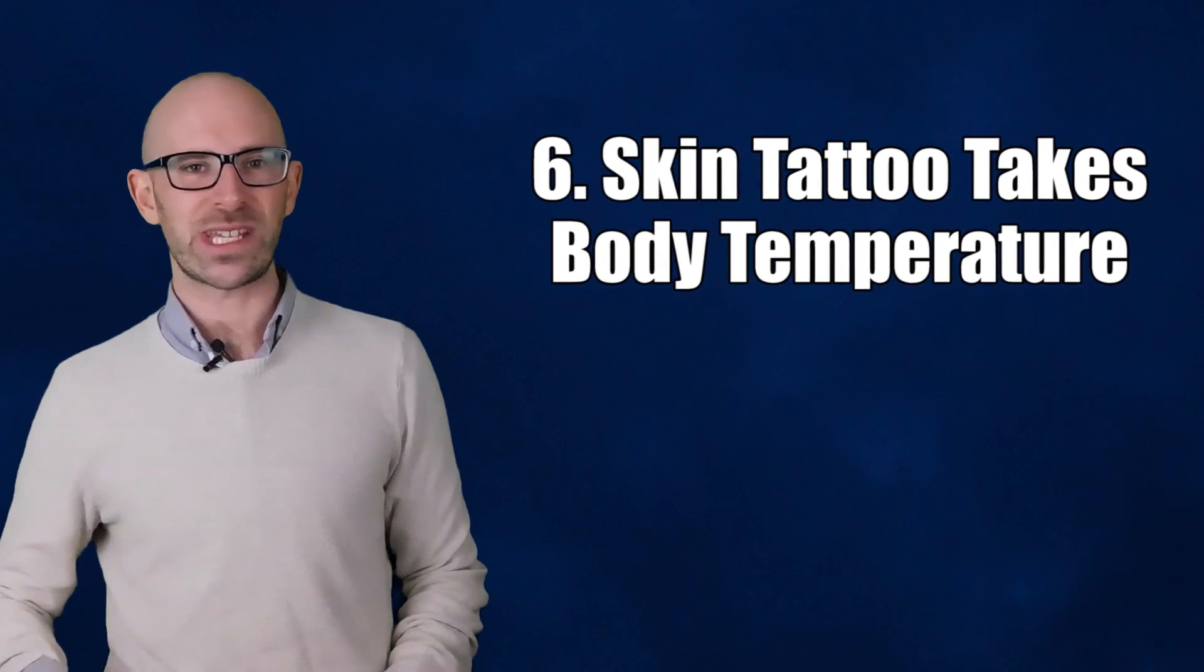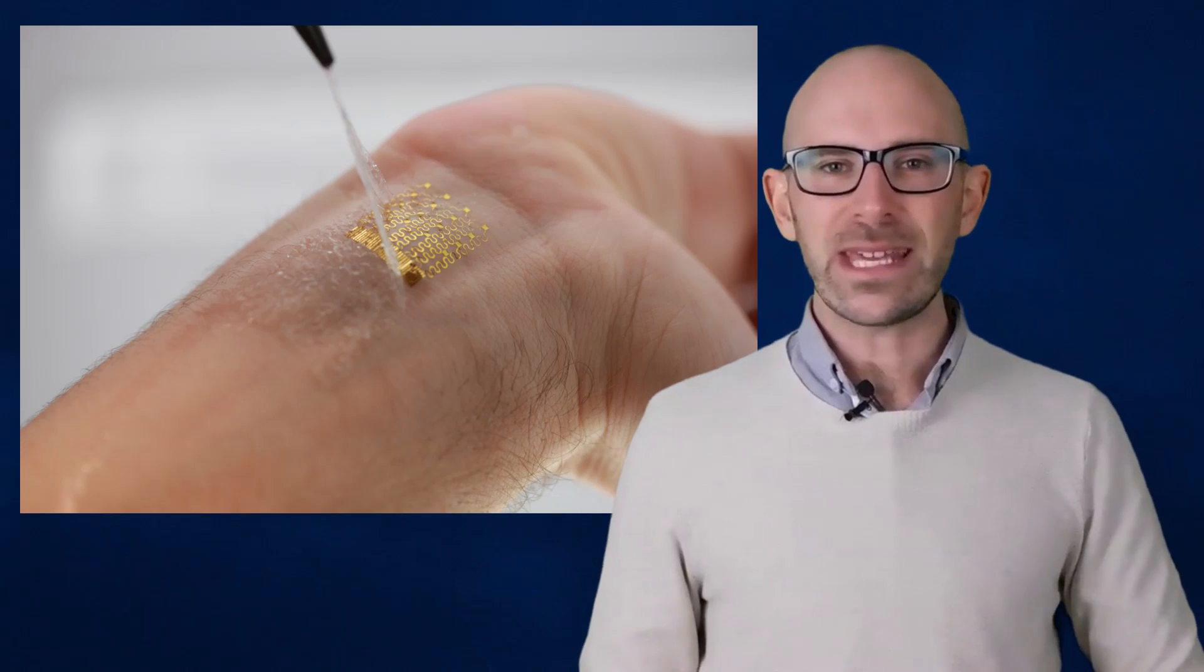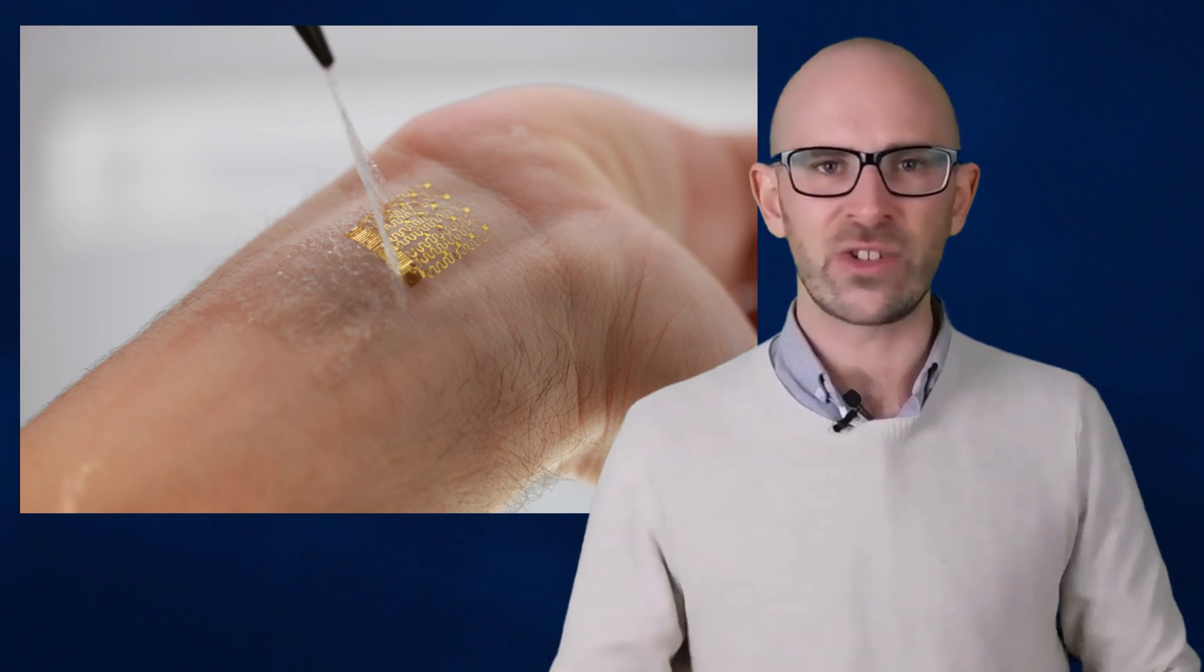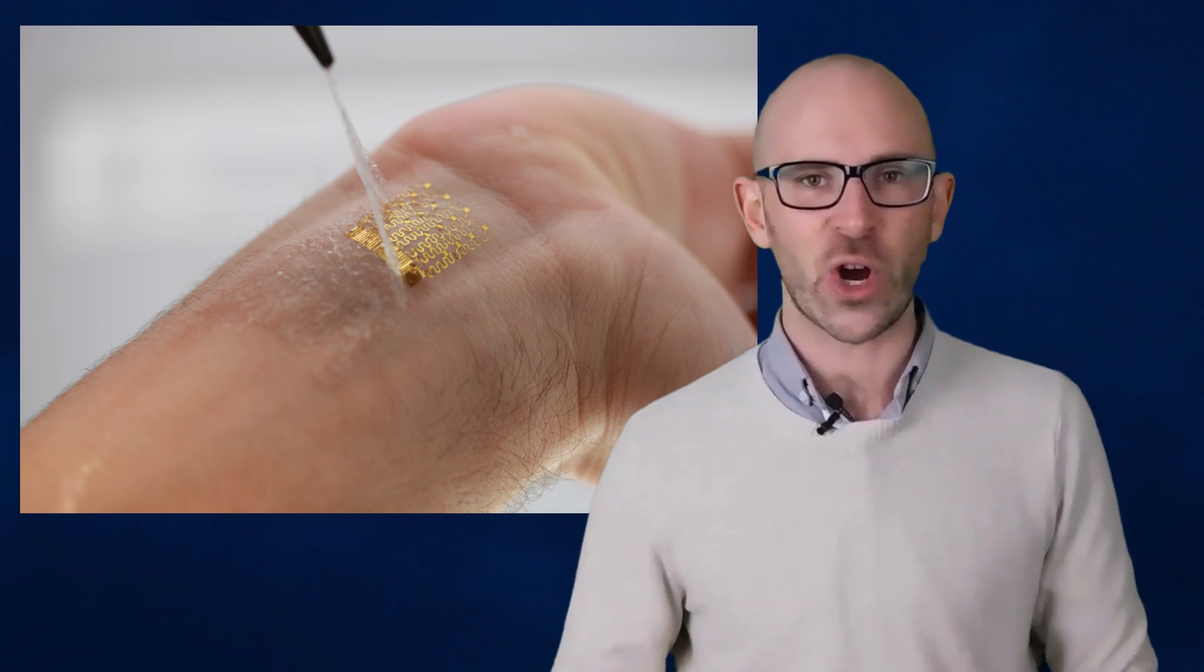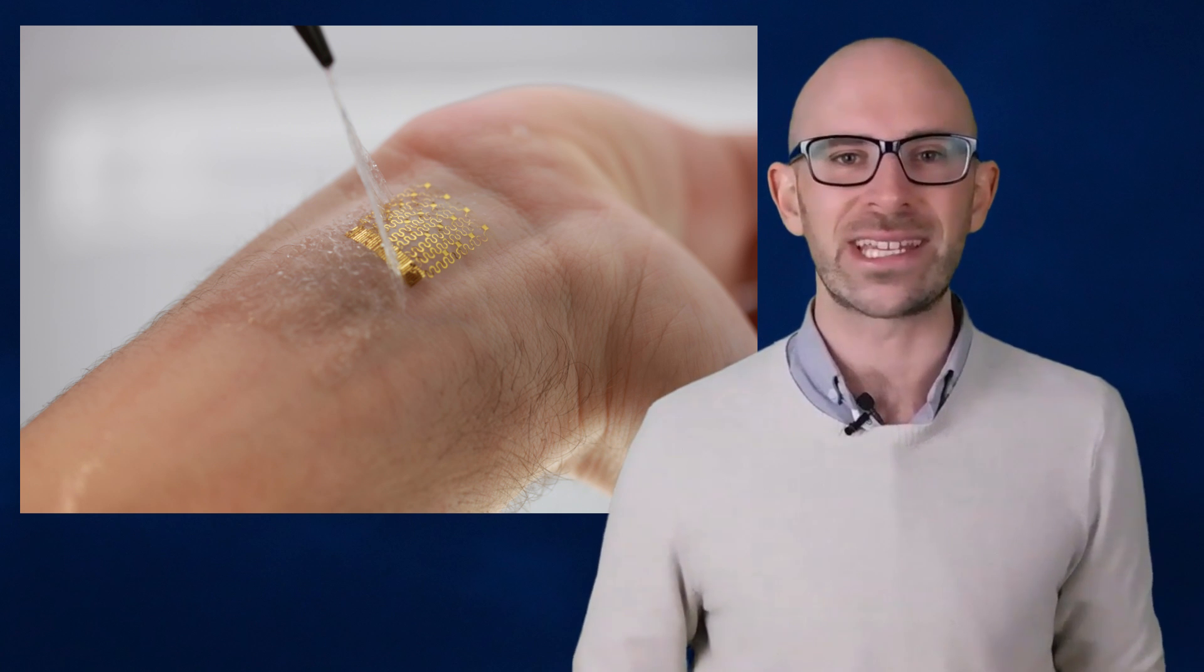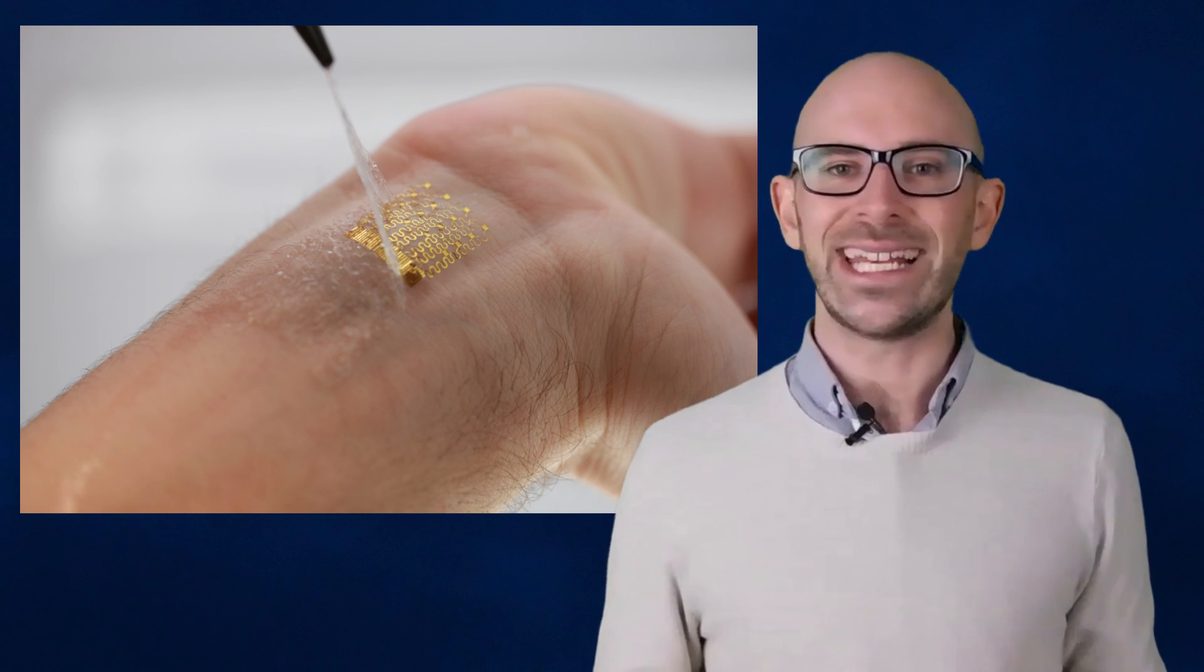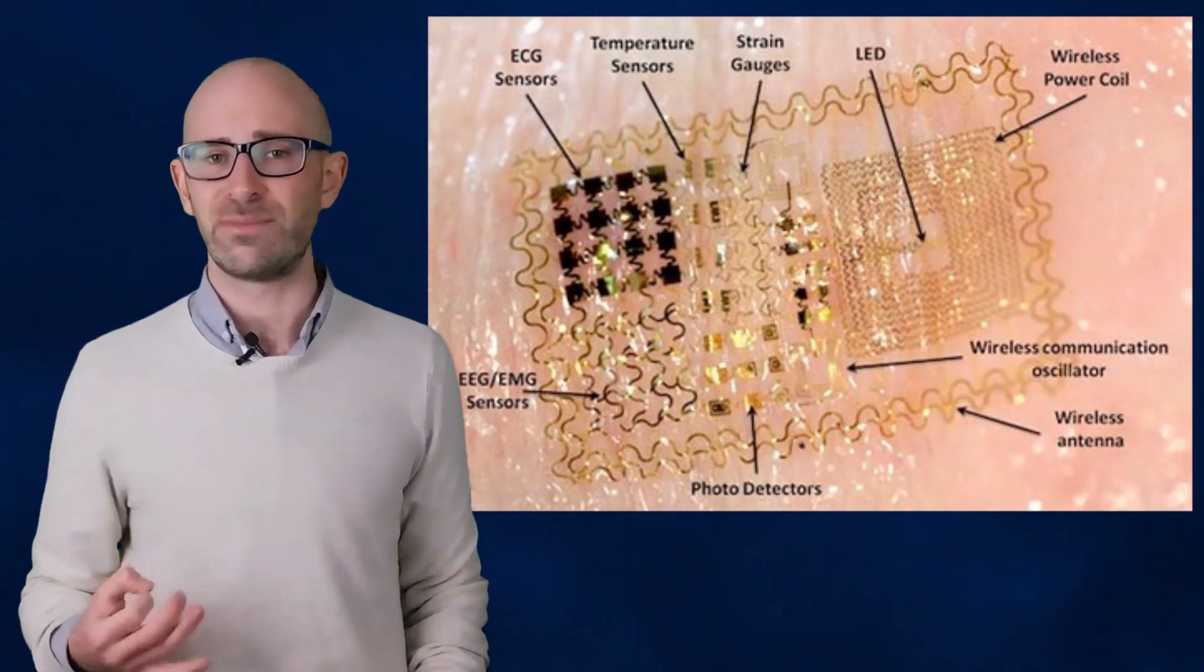Number 6. Skin Tattoo Takes Body Temperature. A team of researchers from China, the USA, and Singapore have developed an extremely thin electronic patch that sticks to the skin just like a temporary tattoo. It can accurately measure the temperature of the person currently wearing it, as well as blood vessel dilation and constriction. It can also measure the health level of the heart, brain, and other organs.